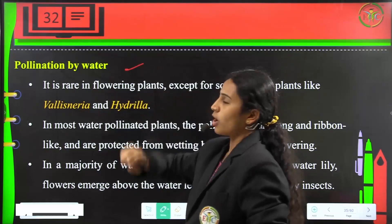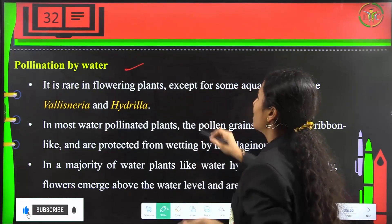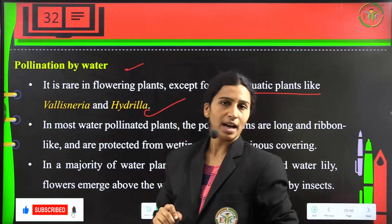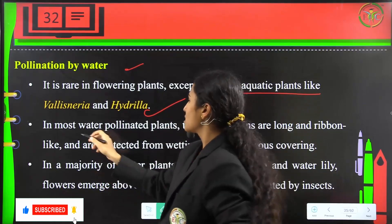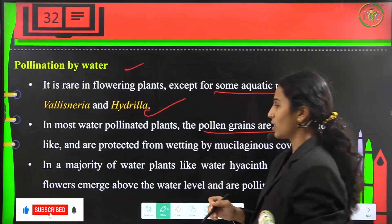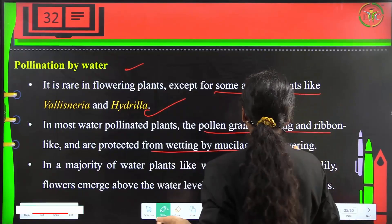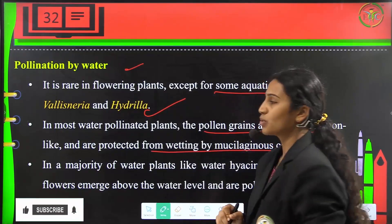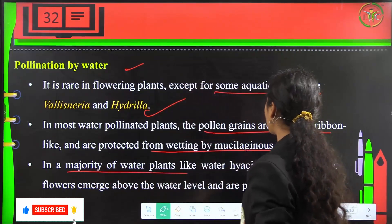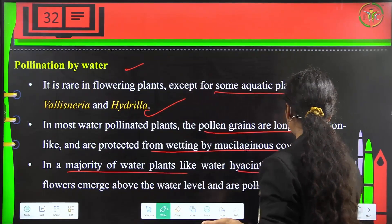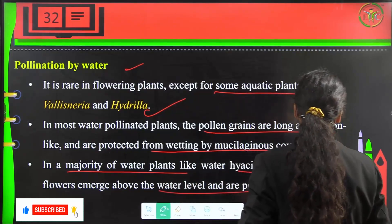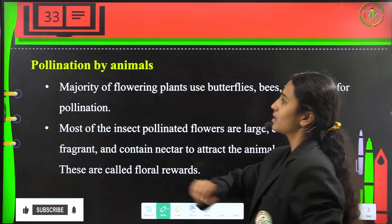Pollination by water is rare in flowering plants except for aquatic plants like Vallisneria and Hydrilla. In most water-pollinated plants, pollen grains are long ribbon-like structures protected from wetting by mucilaginous coverings. In most water plants like Hyacinth and water lily, the flowers emerge above the water level and pollination is done by insects.